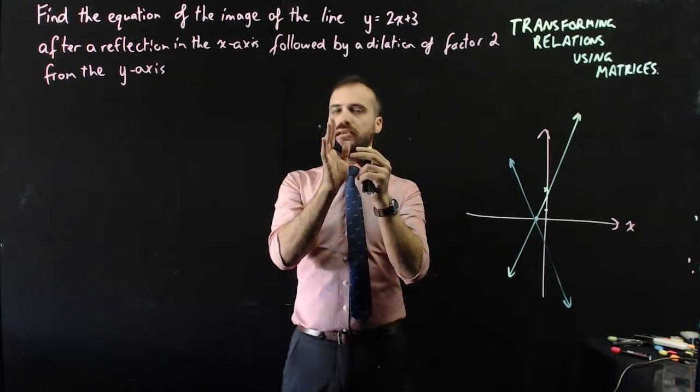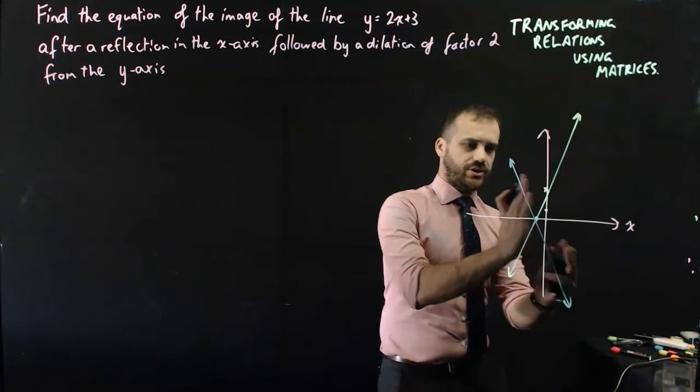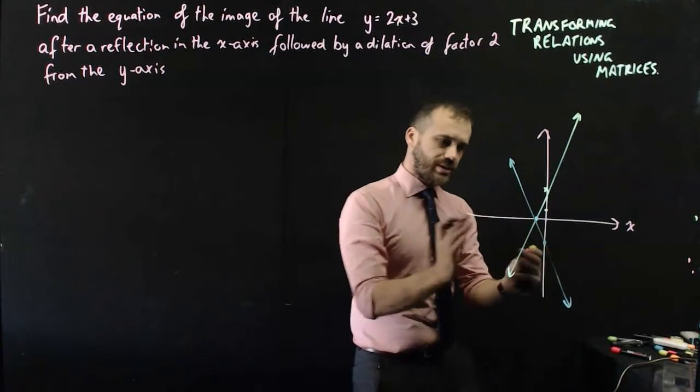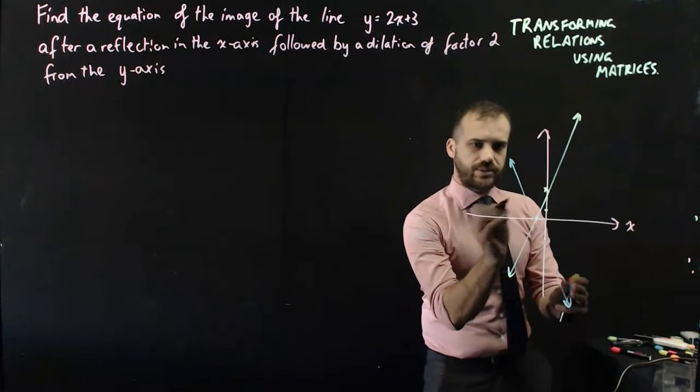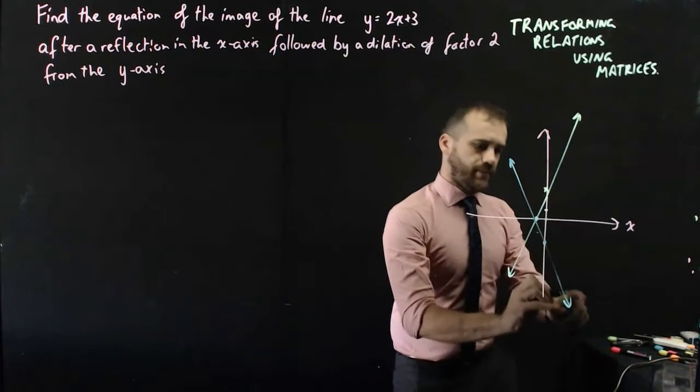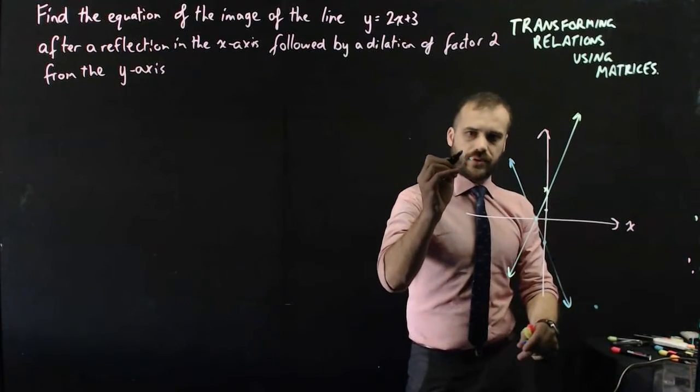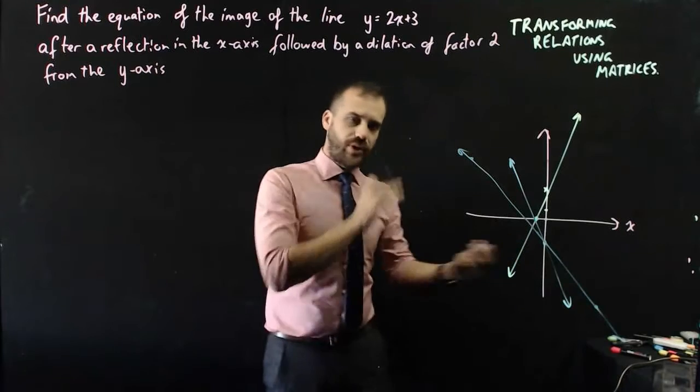A dilation of factor 2 from the y-axis. So that means from the y-axis it's getting stretched around that point here. So it's still going to pass through the y-axis at that point, but this point moves over here. This point's going to be twice as far as it was before. This point's going to be twice as far as it was before.